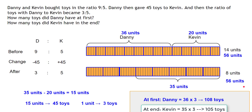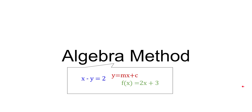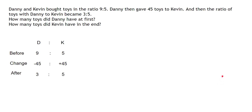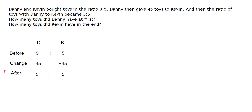Now let's move on and use the algebra method to solve the same problem. Even in the algebra method, we start with the same setup: Danny to Kevin — before is 9 to 5, the change is minus 45 for Danny and plus 45 for Kevin, and after is 3 to 5.